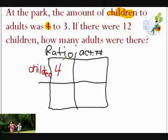And in the story problem, the ratio for adults is 3. So we're going to put a 3 under the ratio box at the bottom and label it adults.